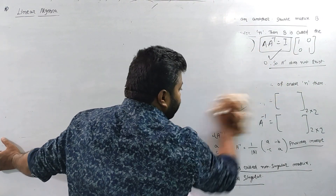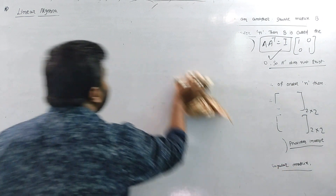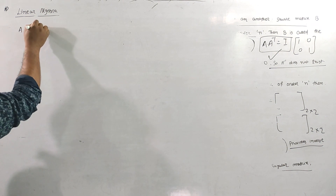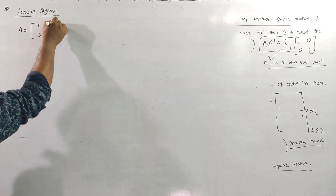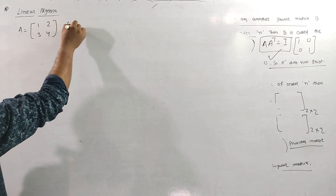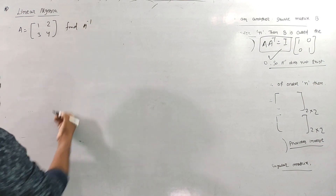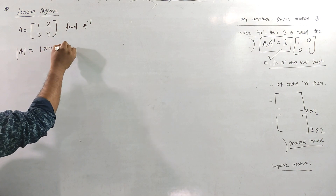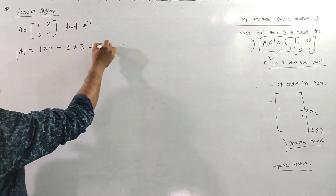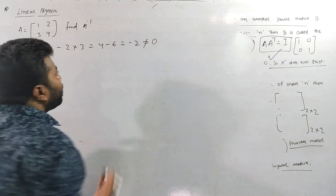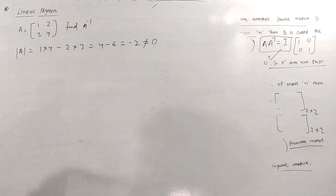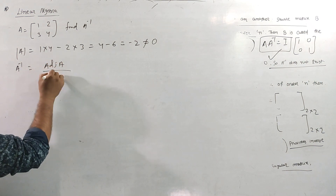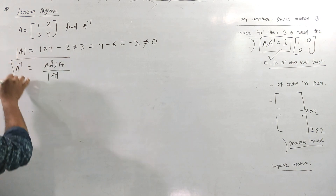Let's take a 2×2 matrix example. The matrix A is [1, 2; 3, 4]. We need to find A inverse. First, let's check A mod. So A mod is 1 into 4 minus 2 into 3, so 4 minus 6 is minus 2, which is not equal to zero. So that means A inverse exists.